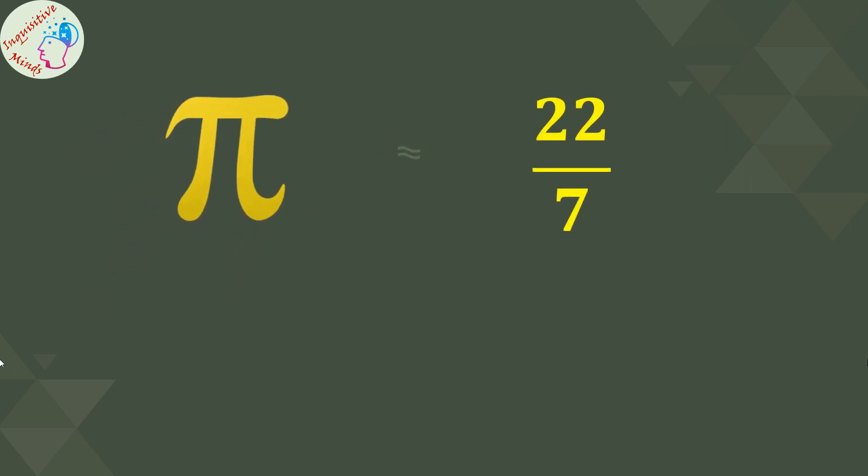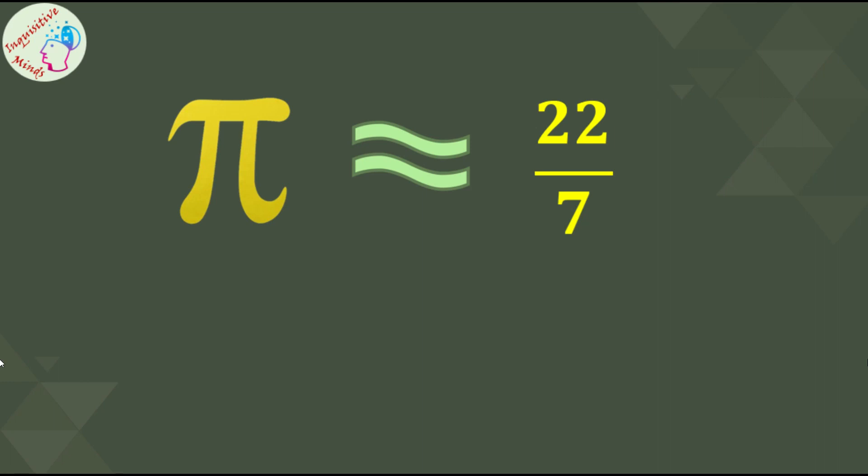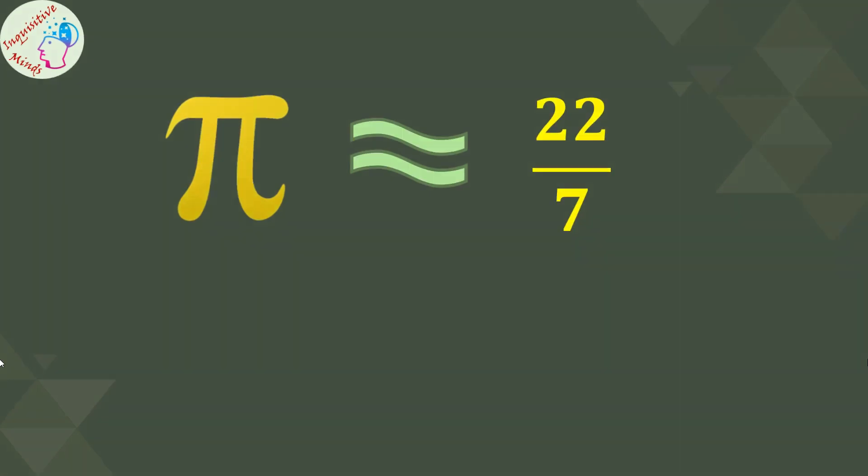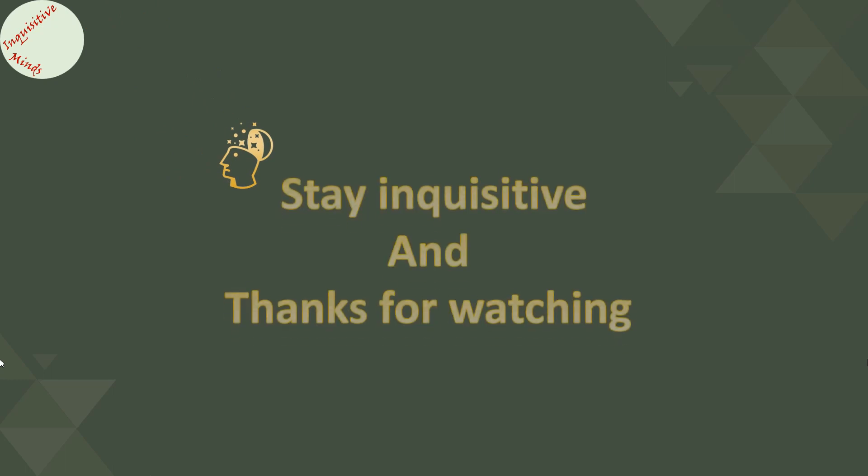Now it is clear that pi is actually not equal to 22 upon 7, but is approximately equal to 22 upon 7. That explains why pi is an irrational number and 22 upon 7 is a rational number. Now all my lovely students, stay inquisitive and thanks for watching!